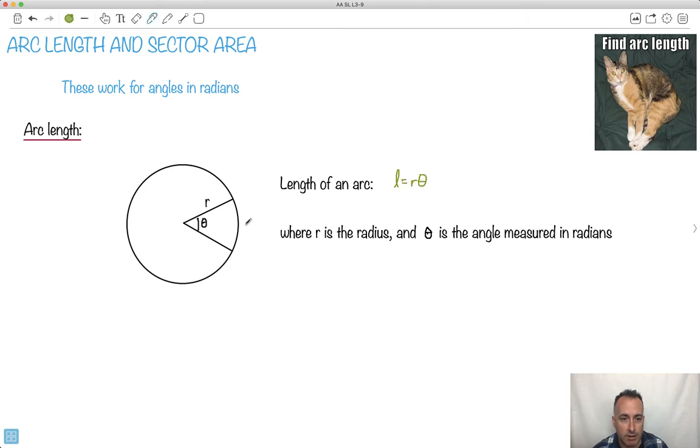Where l is this arc length here. It's this actual curved distance that you do. So it's not the straight line between these two. It's the curved distance. That's what we call it an arc length. It's the length of a curved arc.